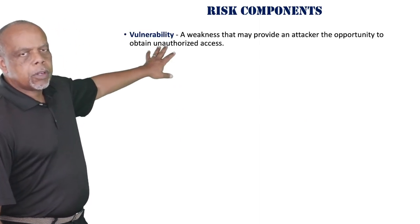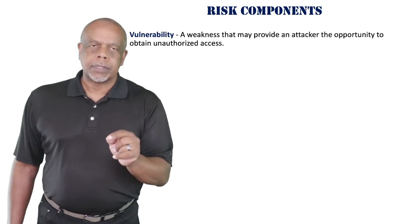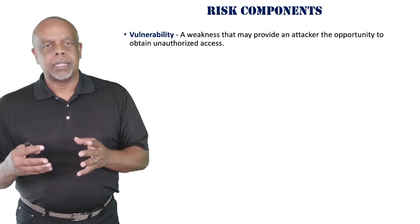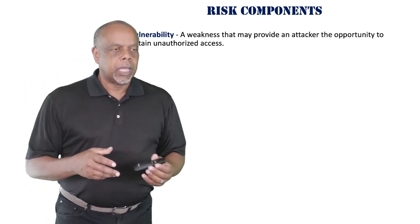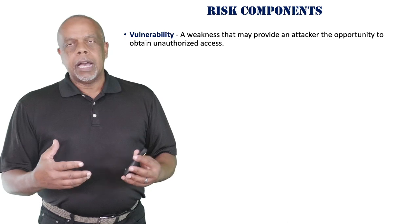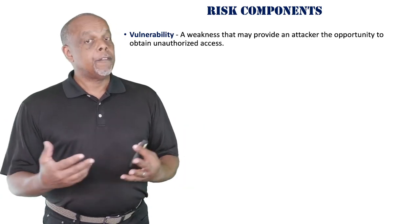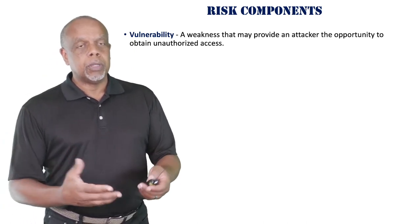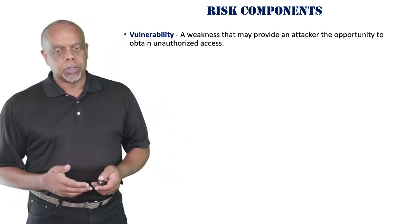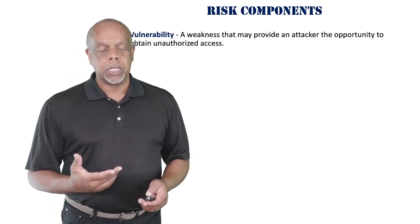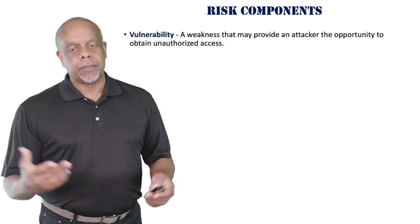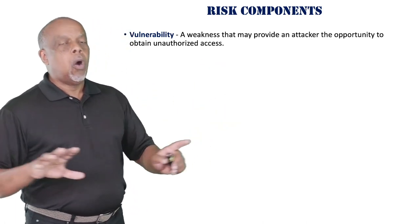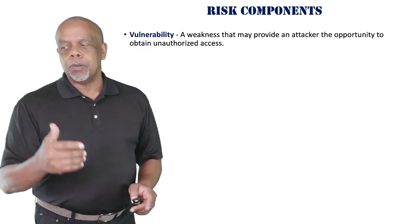Risk has different components. A vulnerability is a weakness that may provide an attacker the opportunity to obtain unauthorized access. Think about it this way: I can leave my car window open — that's a vulnerability. It doesn't mean something's going to happen; it just means the car is more vulnerable to being broken into, or more vulnerable to rain coming in if the weather changes. There's a whole heap of vulnerabilities out there that we have to deal with.